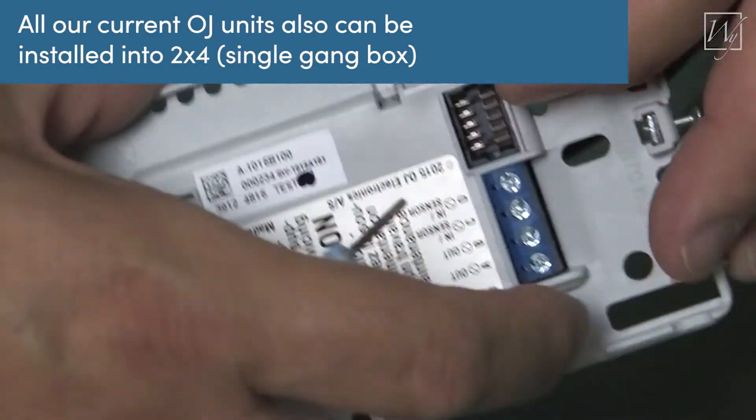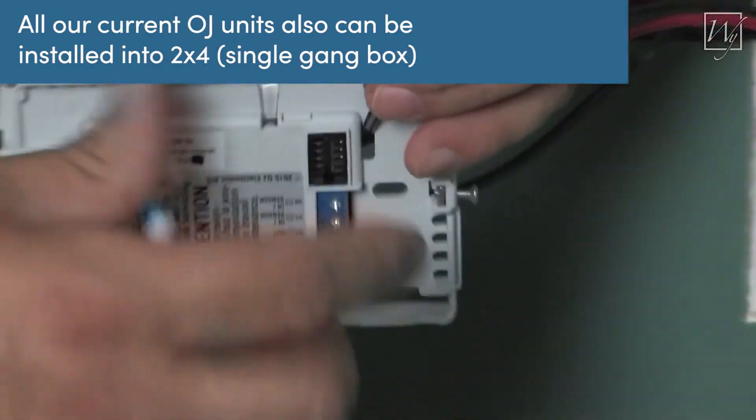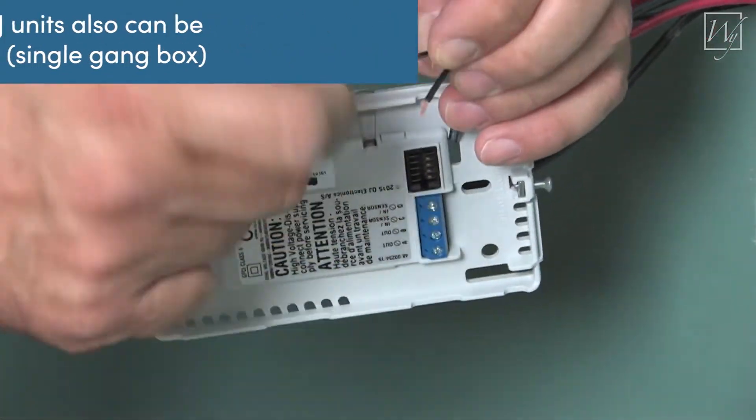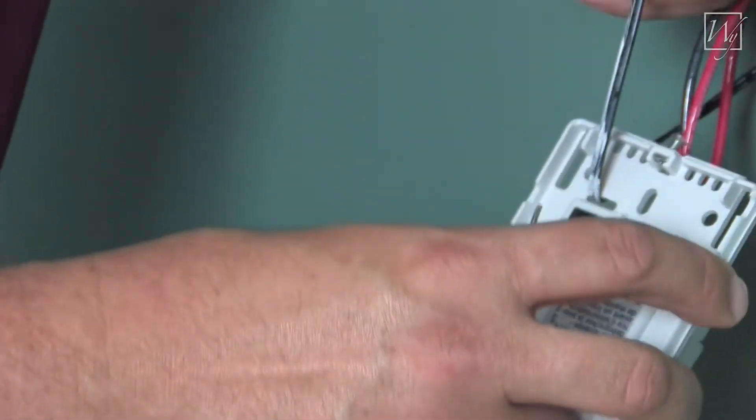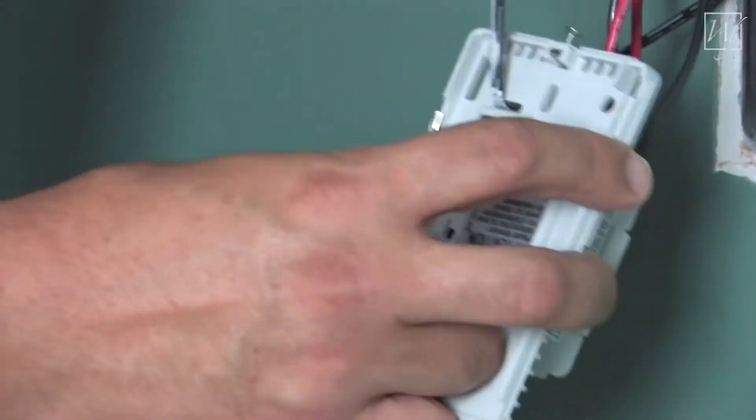And once again, this is another wire that has no polarity, so either one of the wires can go under either one of the terminals. Sometimes it's easier to stick it all the way out like this to make it go in there a little bit better.